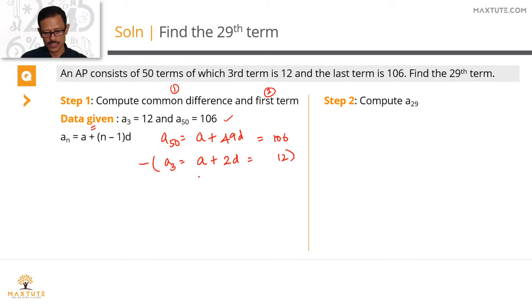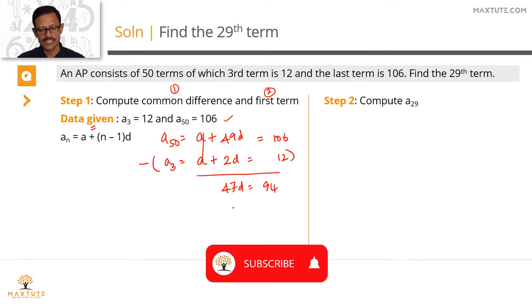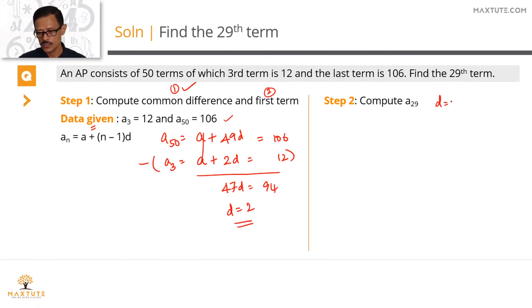Subtract the second equation from the first one. So what do we have? A gets cancelled with A. 49D minus 2D equals 47D. 106 minus 12 equals 94. 47D equals 94, so D equals 94 by 47, which is equal to 2. So you found out the first value, the common difference. D equals 2.